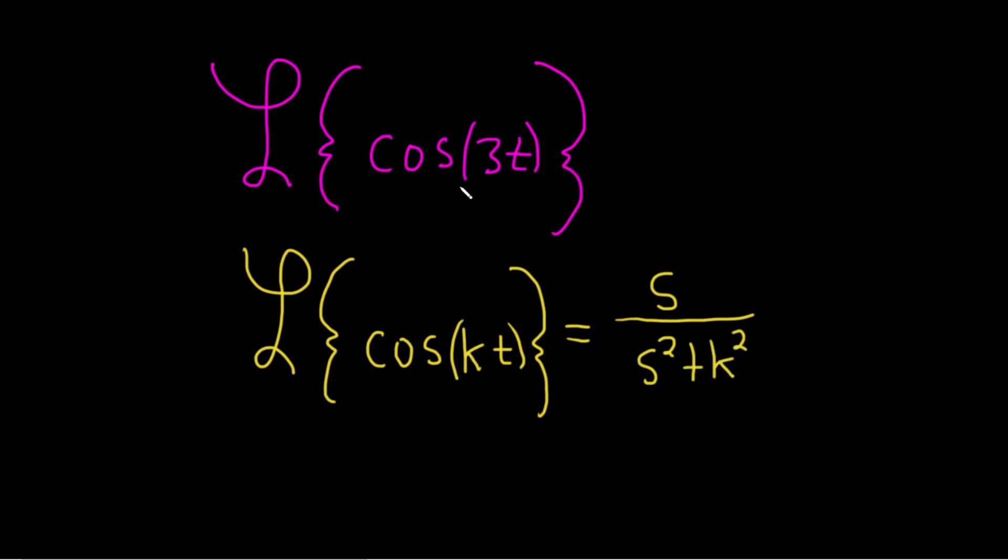Just remember that cosine has the s. If it's sine kt, then you have a k up top.